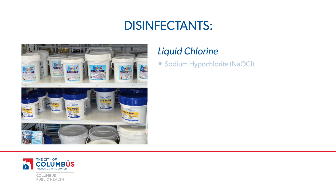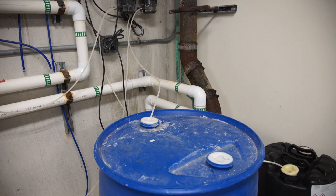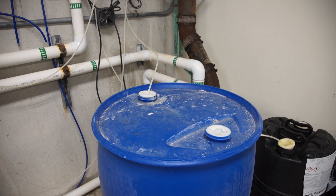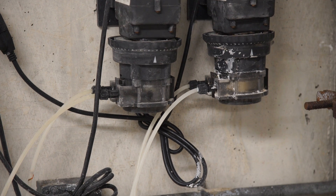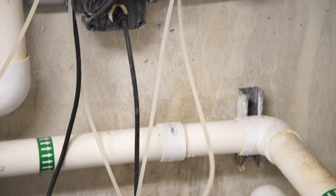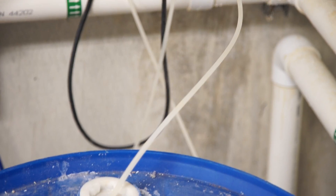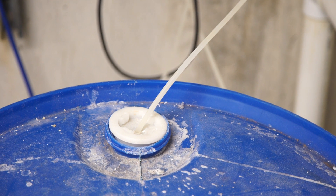The liquid form of chlorine, sodium hypochlorite, should have a chlorine concentration of 10 to 12 percent, higher than your typical household bleach. Sodium hypochlorite, which is basic and raises the water's pH, is put into the pool using a liquid solution feeder. It should be fed into the system downstream from the filter and heater.